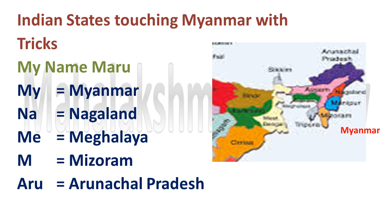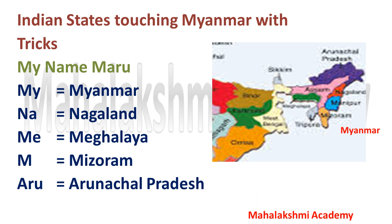Now Myanmar — the states sharing boundaries with Myanmar. The trick is 'My name Maru.' M-Y stands for Myanmar, N stands for Nagaland, M-E stands for Meghalaya, M stands for Mizoram, and A-R-U stands for Arunachal Pradesh. I hope this makes it easy to remember the states sharing boundaries with Myanmar.